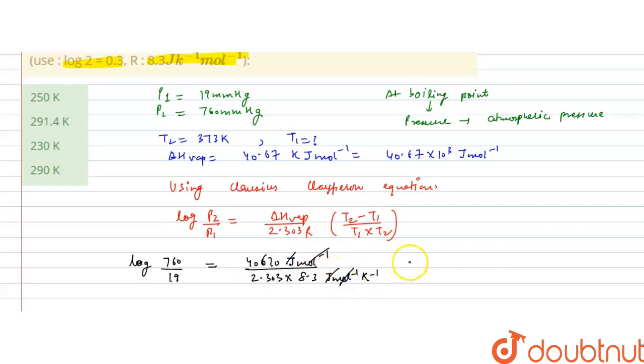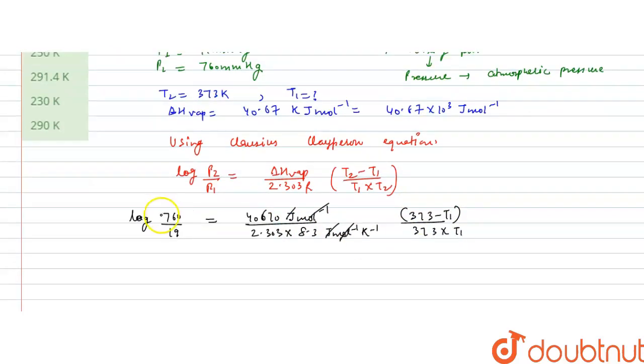And T2 minus T1 will be, T2 is 373 minus T1, divided by 373 into T1. So we have to calculate T1.